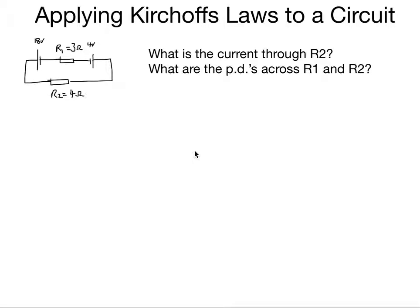So here's a circuit. Now notice in this circuit there are two opposing cells, 18 volts and 4 volts. We've been asked the question: what's the current through R2 and what are the PDs across R1 and R2?